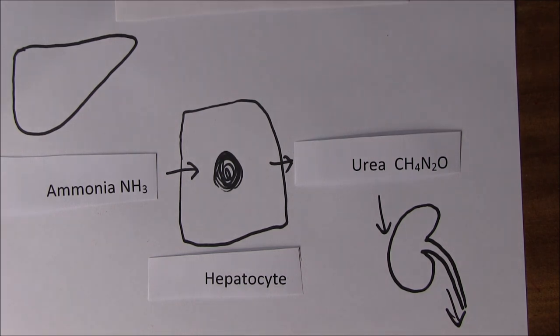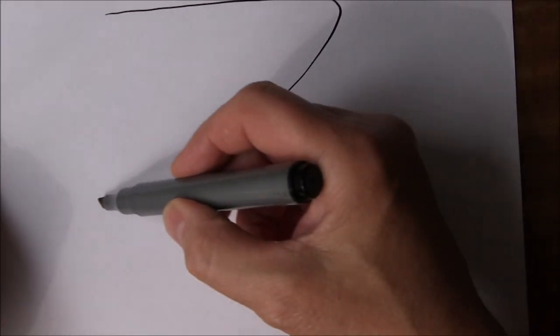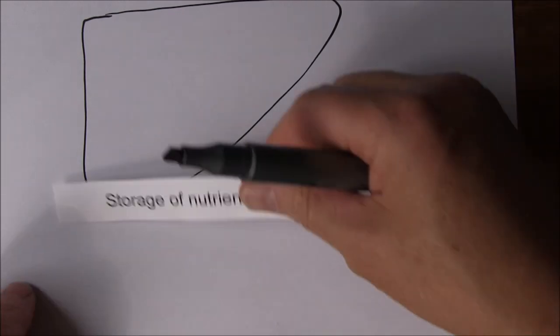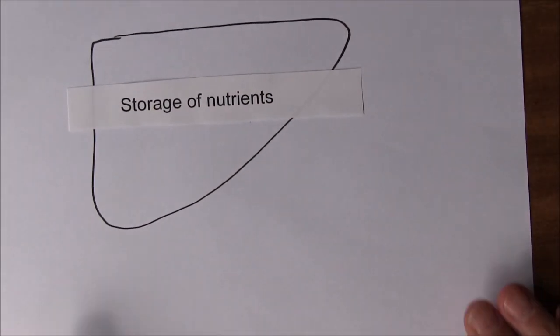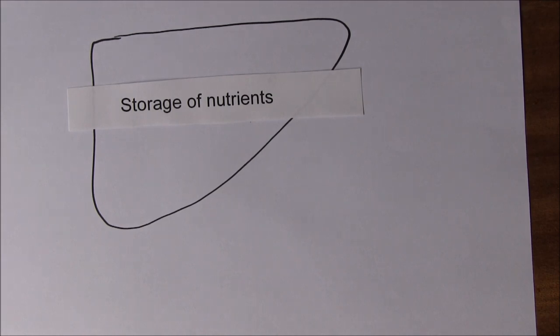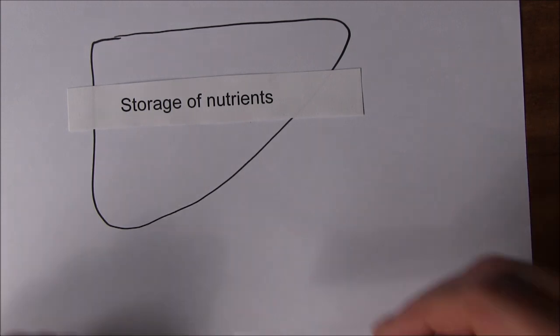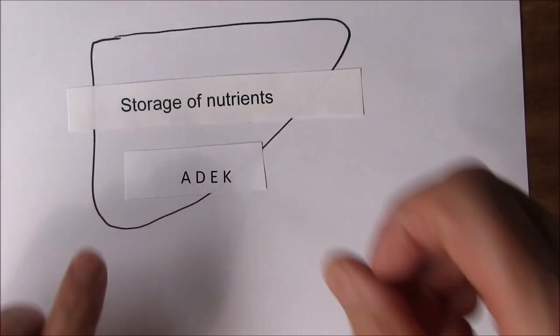Now I think we'll carry on and think about a couple of other functions of the liver. There are so many we could choose from. The liver has got hundreds of functions. Now we want to think about the storage of nutrients. The liver stores the fat soluble vitamins. Because there is fat stored in the hepatocytes.